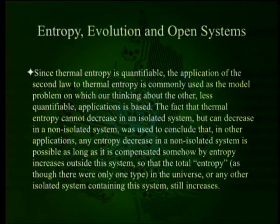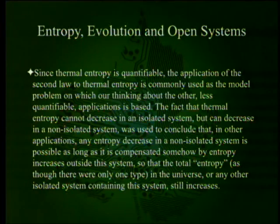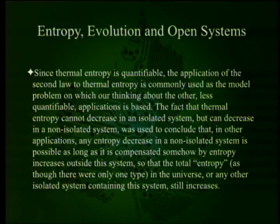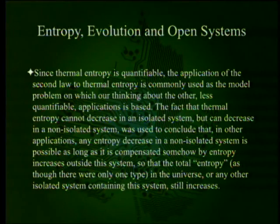Since thermal entropy is quantifiable, the application of the second law to thermal entropy is commonly used as a model problem on which our thinking about the other less quantifiable applications is based. The fact that thermal entropy cannot decrease in an isolated system but can decrease in a non-isolated system was used to conclude that in other applications, any entropy decrease in a non-isolated system is possible as long as it is compensated by entropy increases outside the system, so that the total entropy still increases.